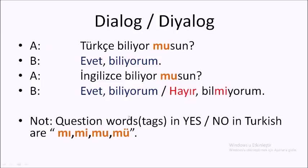Let's look at a short A-B dialogue. A: Türkçe biliyor musun? — Do you speak Turkish? B: Evet, biliyorum. — Yes, I do. A: İngilizce biliyor musun? — Do you speak English? B: Evet, biliyorum. — Yes, I do. Or if your answer is no: Hayır, bilmiyorum. — No, I don't know. 'Or' in Turkish means 'veya' or 'ya da.'